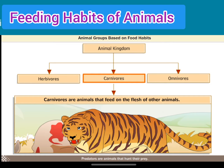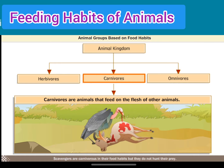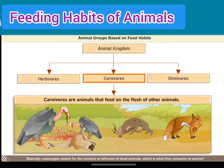Predators are animals that hunt their prey. Scavengers are carnivores in their food habits but they do not hunt their prey. They eat the dead bodies of animals killed by predators. Basically, scavengers search for the remains or leftovers of dead animals, which is what they consume to survive. They are called scavengers because they help in cleaning up by consuming dead and decaying animals.